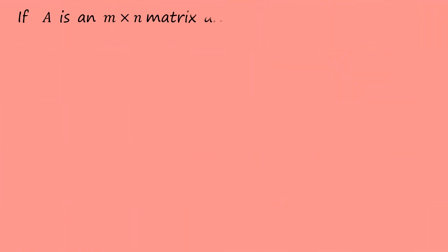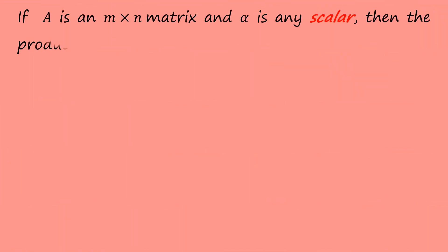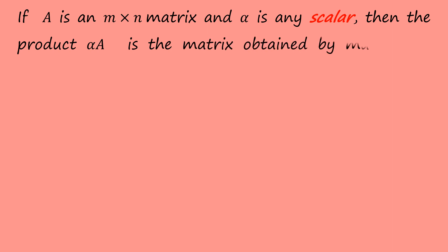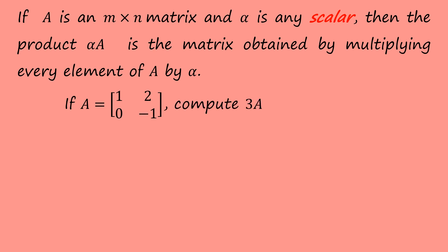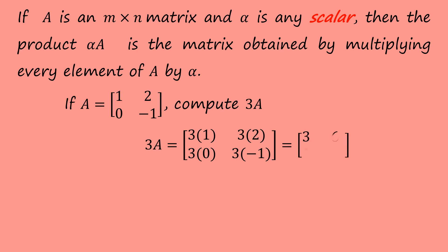If A is an m by n matrix and alpha is any scalar, then the product alpha·A is the matrix obtained by multiplying every element of A by alpha. We have a 2 by 2 matrix A. To compute 3A, we multiply each element by 3 and obtain this result.